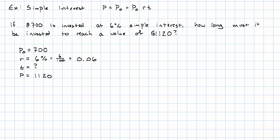Plugging in what I know, and leaving what I want to find out as a variable, then, I have 1,120 equals 700 plus 700 times 0.06 times T.